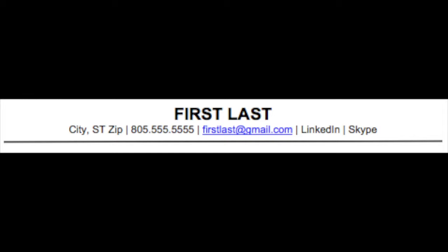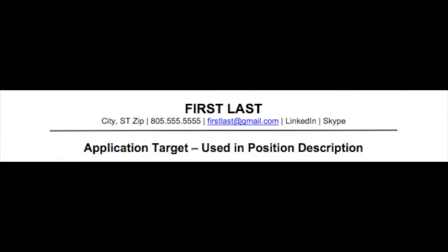The letter A in the CAREER model stands for application target. This is the identical title of a job found in a very specific job description, or very specifically what the position is called at the company you're applying to.